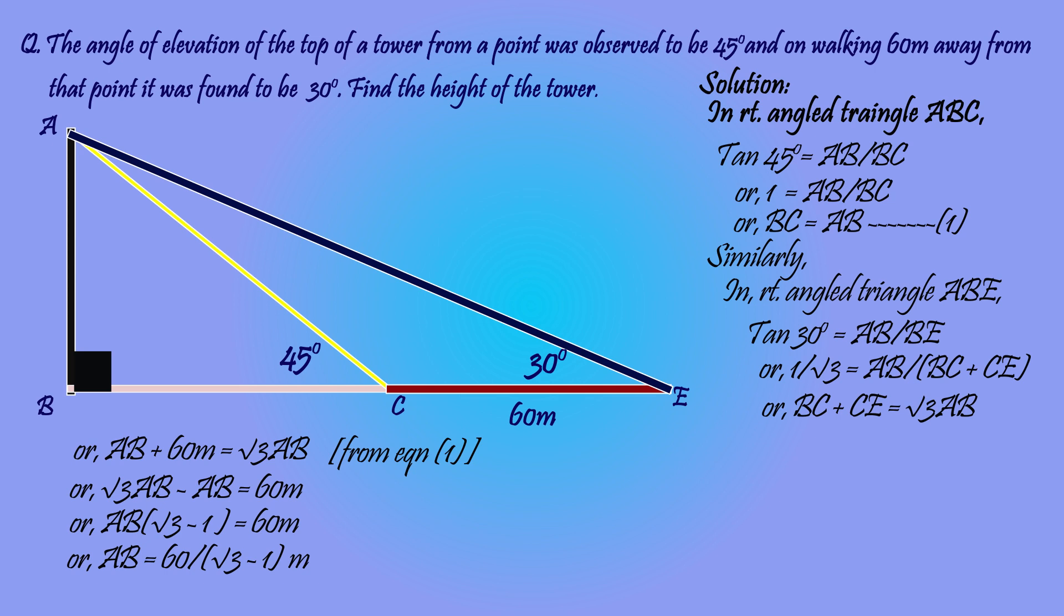While dividing we get AB equals 81.97 meters. Hence the height of the tower is 81.97 meters.